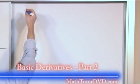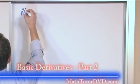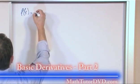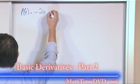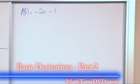So for our next one, what if we have f of x is equal to negative 2x minus 1? How do we take the derivative of this guy?